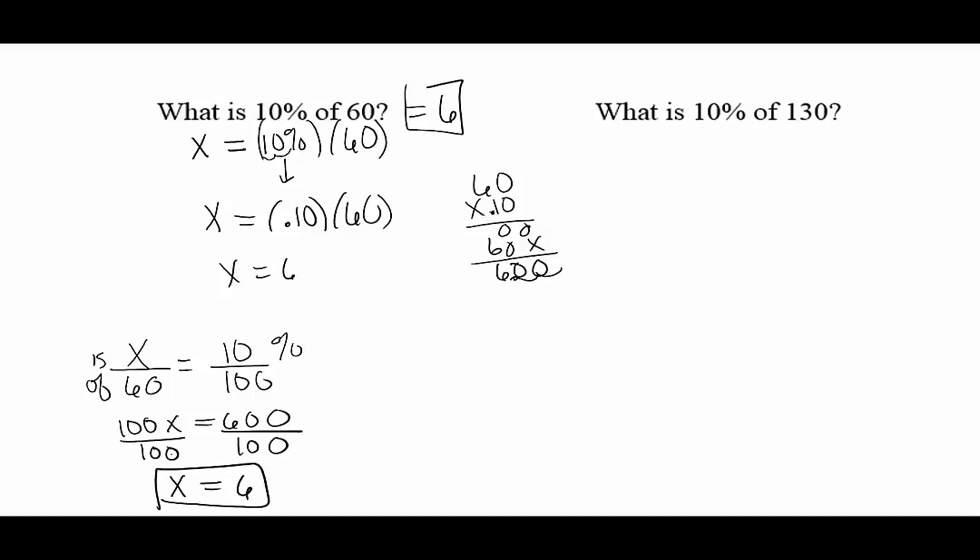What is 10% of 60? Six. Another way to do that is is over of and percent over 100. What is 10% of 60? Now we cross multiply, isolate your variable, divide by 100. X equals six. What is 10% of 60? Six.